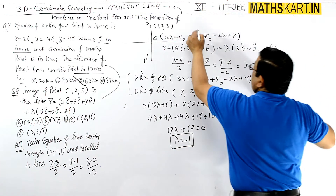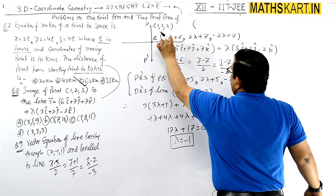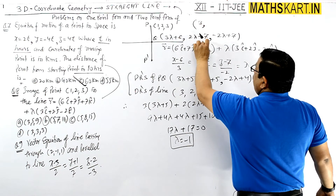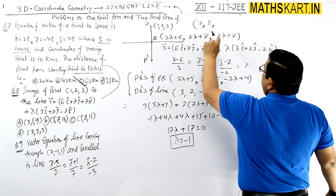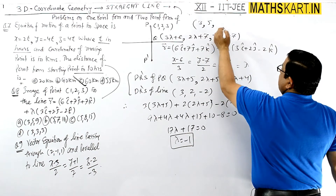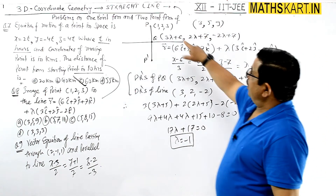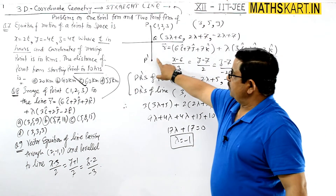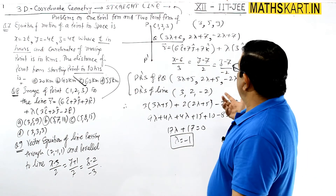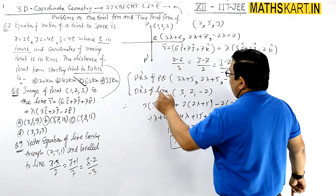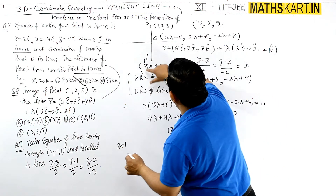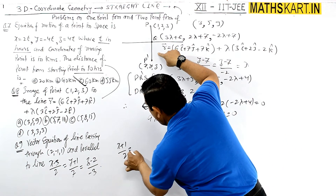Since Q is the midpoint of P(1, 2, 3) and image P'(x, y, z), we use the midpoint formula. For x: (x + 1)/2 = 3, so x = 5. For y: (y + 2)/2 = 5, so y = 10 − 2 = 8. So two coordinates of P' are found: x = 5, y = 8.